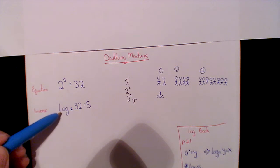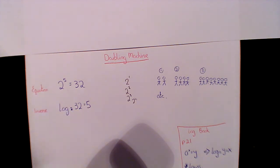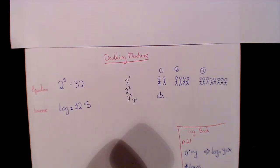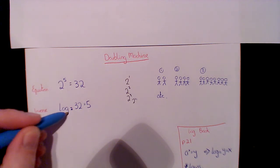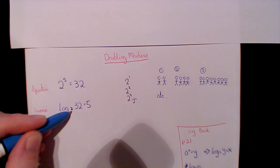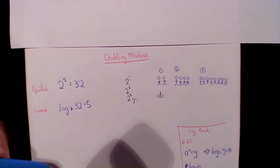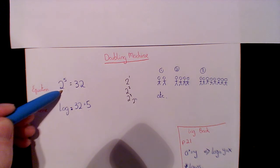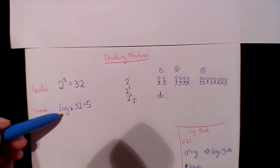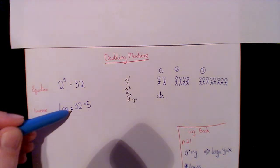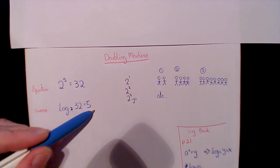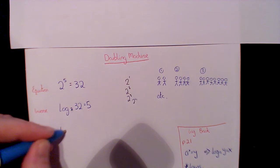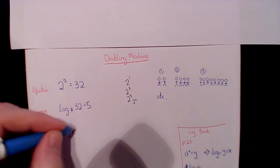Another way of looking at that is with logarithms. We write it as: log of 32 to the base 2 equals 5. So 2 to the power of 5 is 32 and log₂32 = 5 are the same thing, just written differently. What the log is really saying is: how many times does 2 have to be multiplied by itself to get to 32? The answer is 5 times.